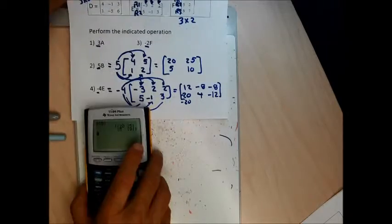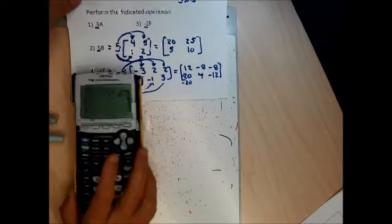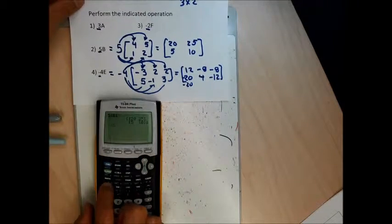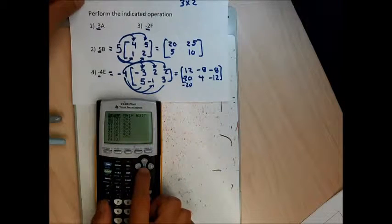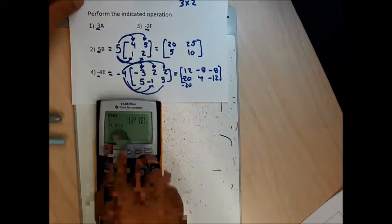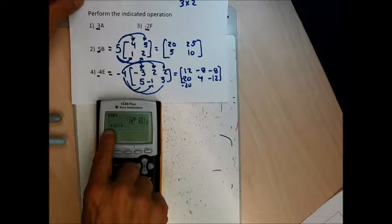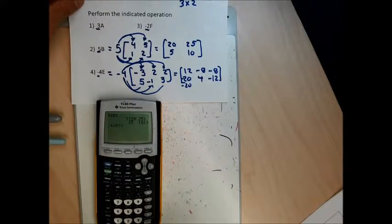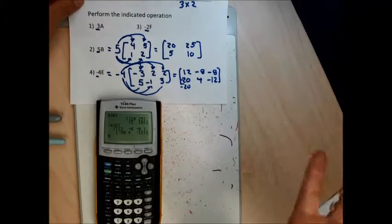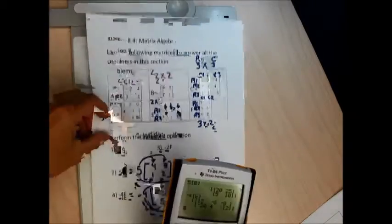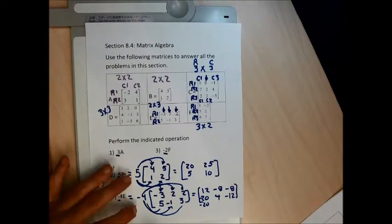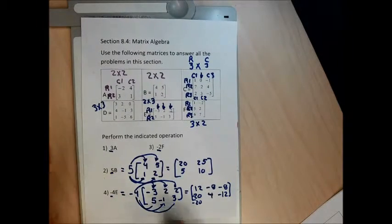To do negative 4 times E, I type the negative on the bottom row of my calculator, then the number 4, then hit second and the X-inverse matrix key. Stay in the names column, go down to number 5 for E. On my main screen it says I'm going to do scalar multiplication of negative 4 times matrix E. When I hit enter, it gives me 12, negative 8, negative 8, negative 24, negative 12.